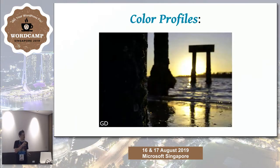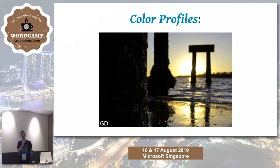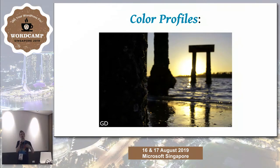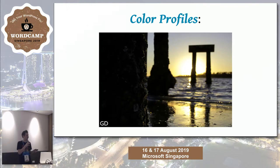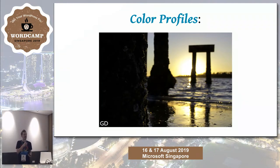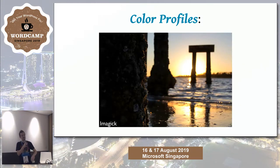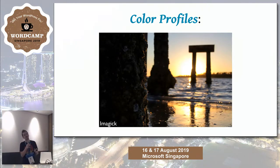One of the things Imagick enables is color profiles. If you have a custom color profile for an image that isn't just sRGB and you upload it, it might look off — this example was an Adobe RGB image uploaded with GD, which isn't able to save color profiles, so the resized versions might look a little funny. With Imagick, using that same image, you'd get colors that are more accurate to the original.